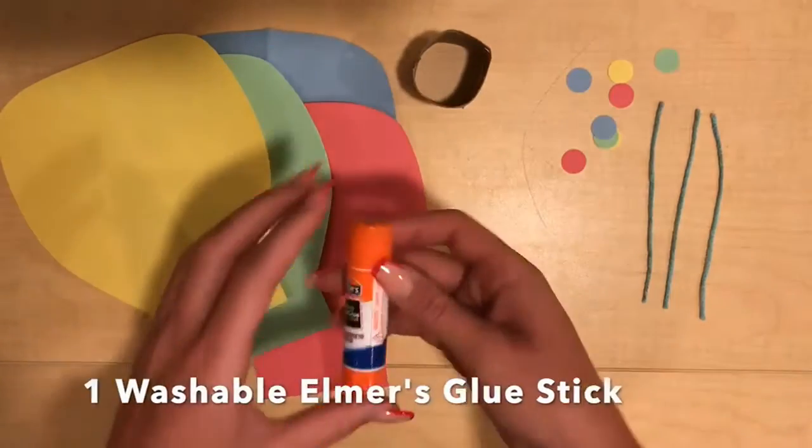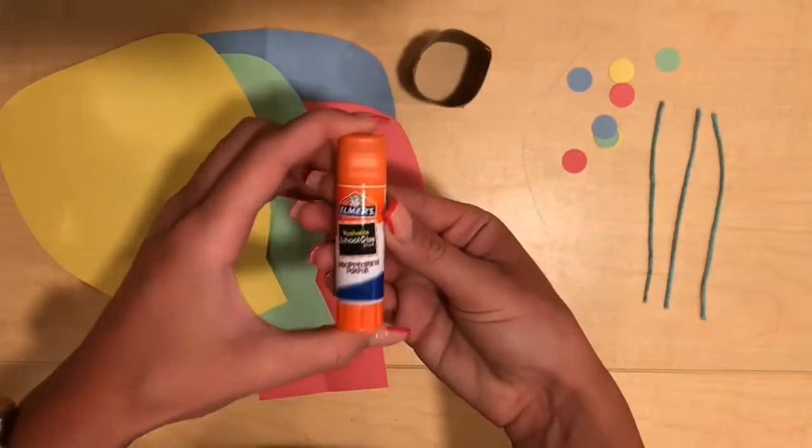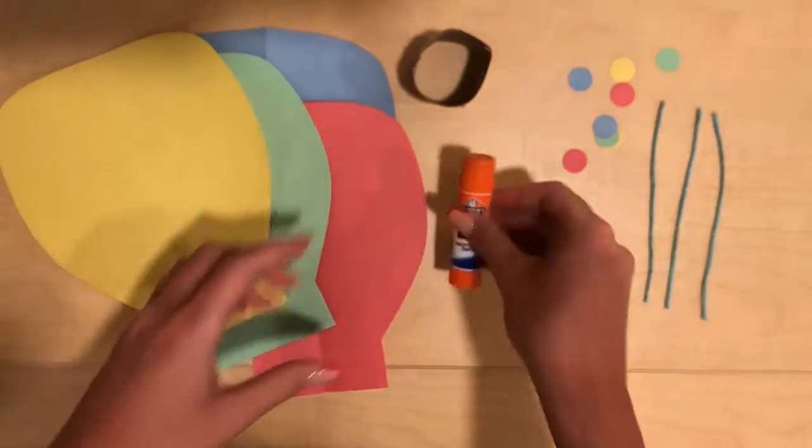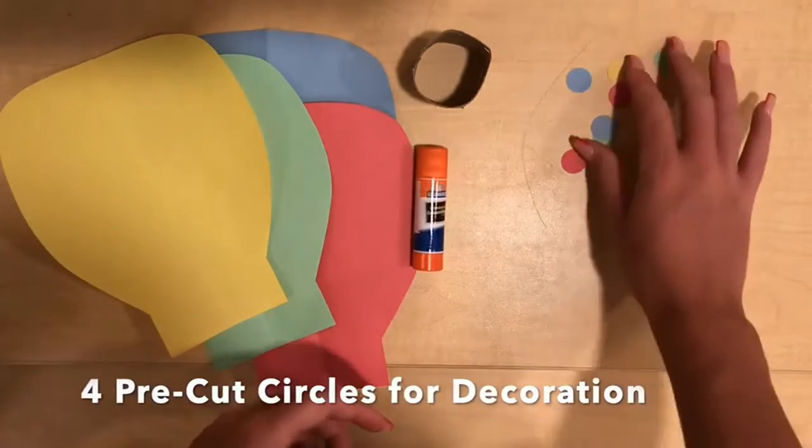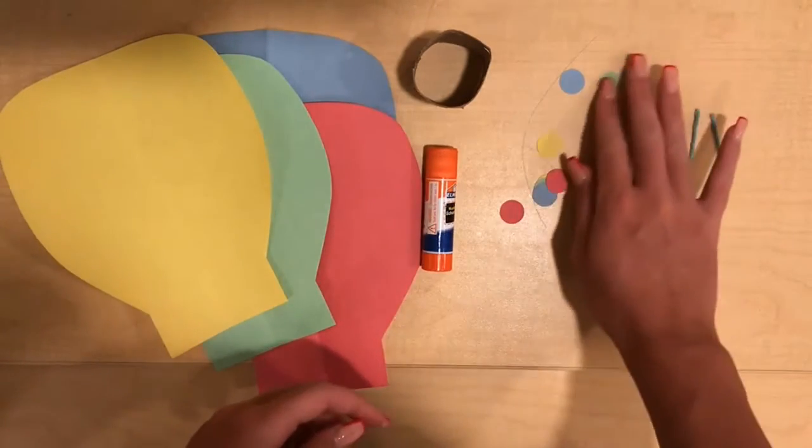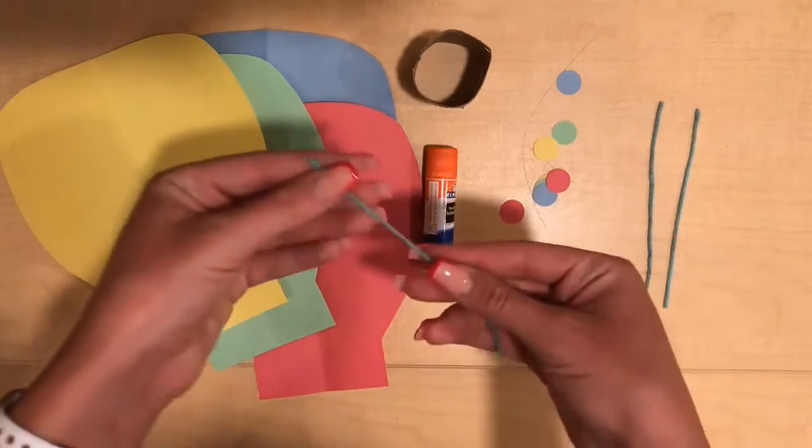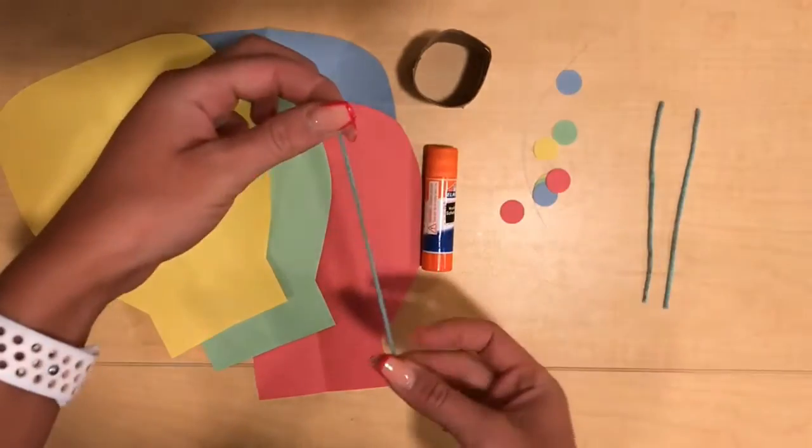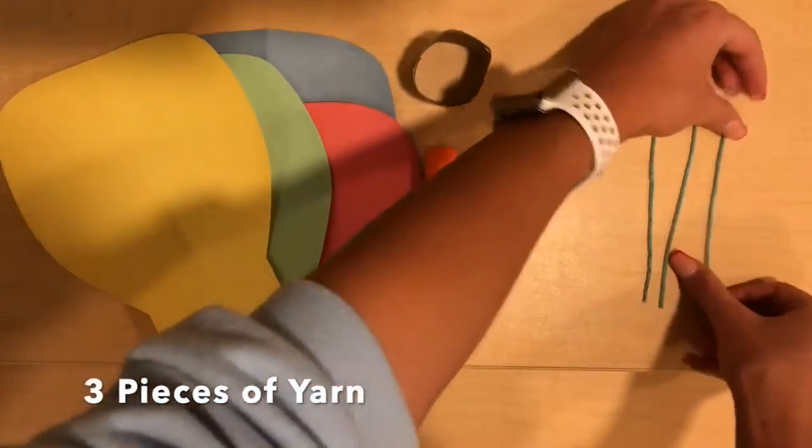one Elmer's glue stick that is washable, and I have provided you pre-cut circles that you are able to put on your toilet paper roll to serve as the base for your hot air balloon. And then we have strings that you will use to tie your hot air balloon to the pieces of construction paper.